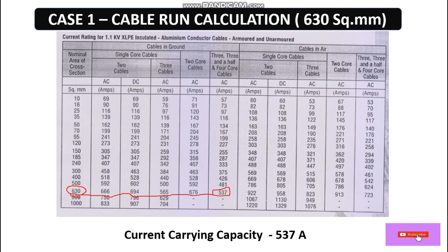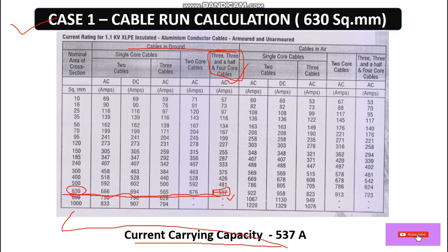Now let's calculate the cable run. Here we are going to install the cable underground. Considering we are going to lay the cable underground, we look at the 3.5 or 4 core options. The formula for the number of cable runs is: Number of cable runs = Full load current / (Current carrying capacity × Derating factor). The derating factor depends on whether the cable is laid underground or in air.